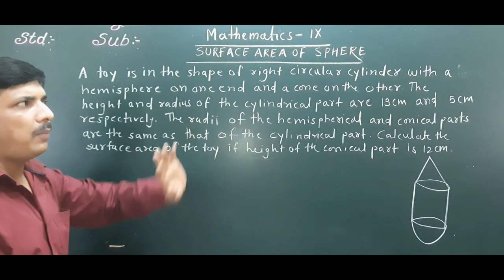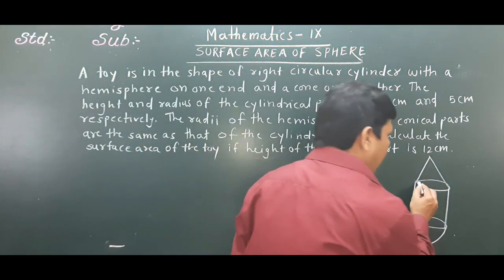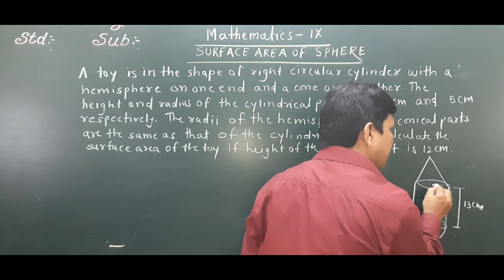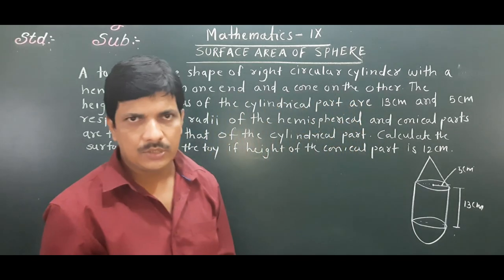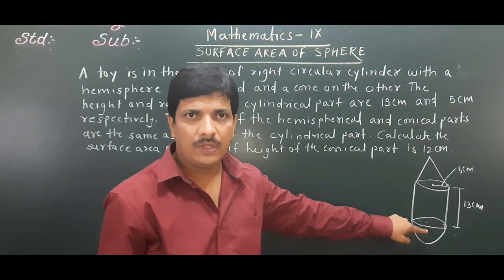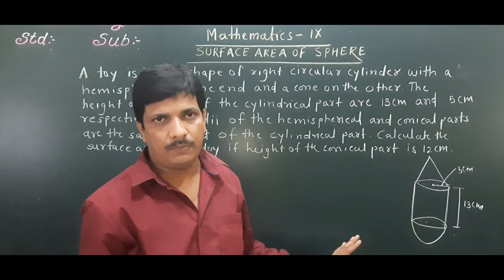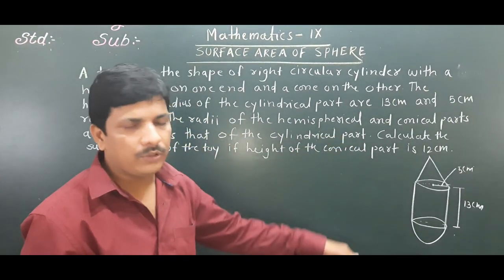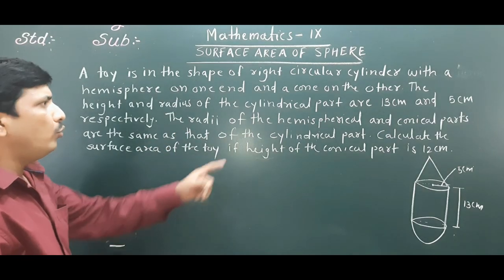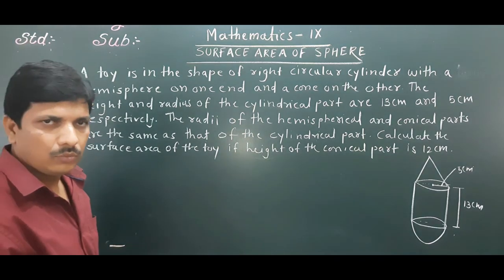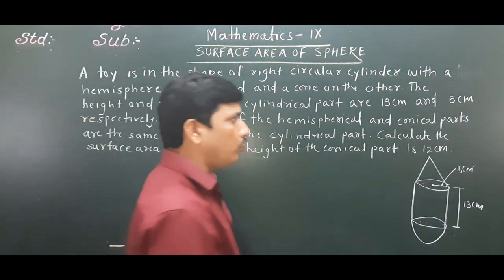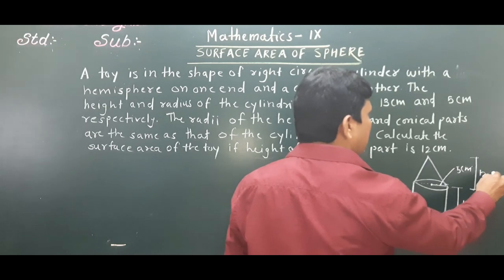Height of cylinder is 13 cm and radius is 5 cm. The radii of the hemispherical and conical parts are the same as the cylindrical part, so radius = 5 cm throughout. Height of the conical part is 12 cm.